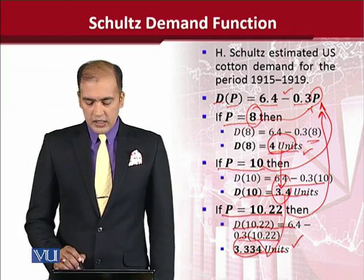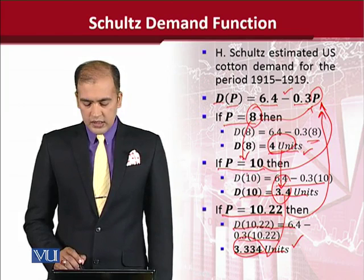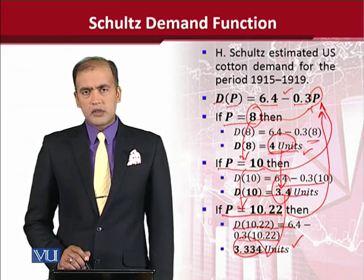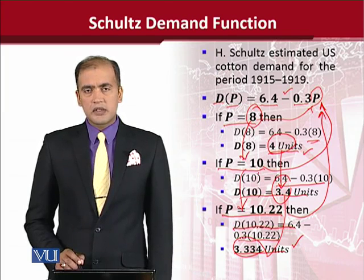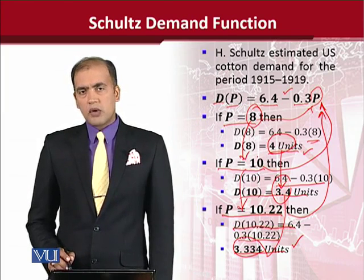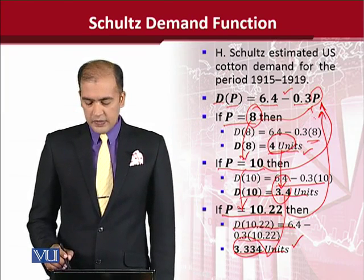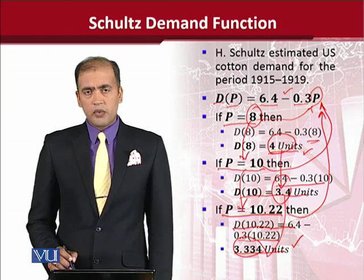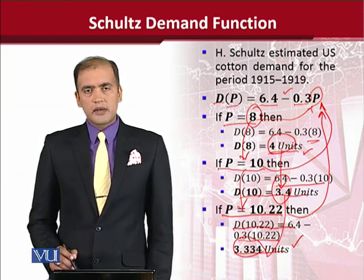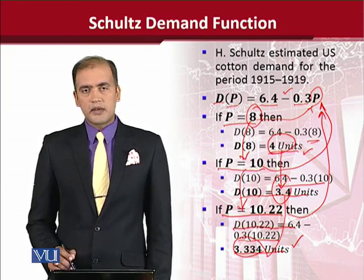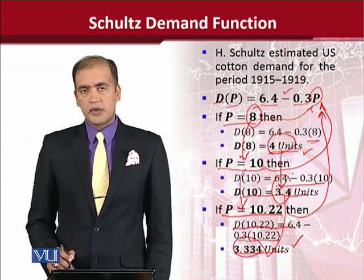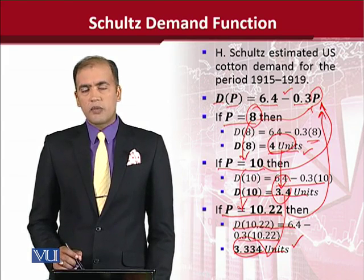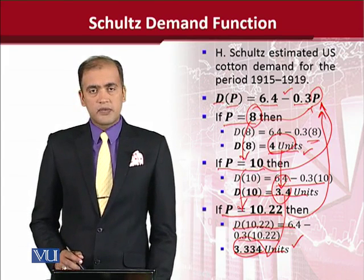So now you can see that as price increases from 8 to 10 to 10.22, the quantity demanded decreases from 4 to 3.4 to 3.334. This sounds very familiar — it sounds like the law of demand. And when we have the law of demand, it is our habit to make a graph of it. Let's see how these points help us graph this function.